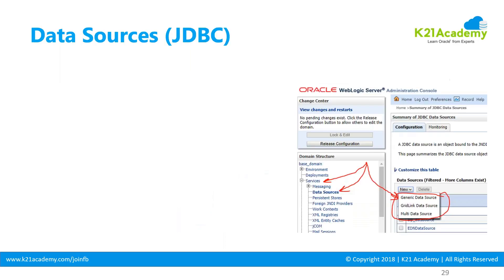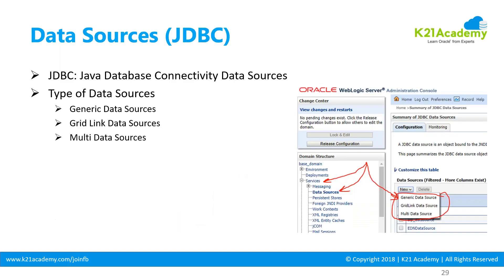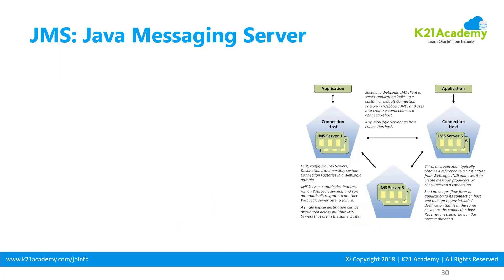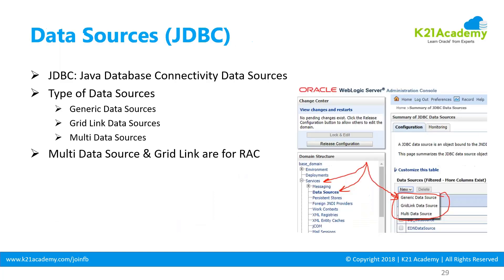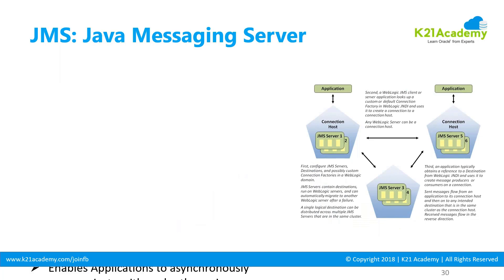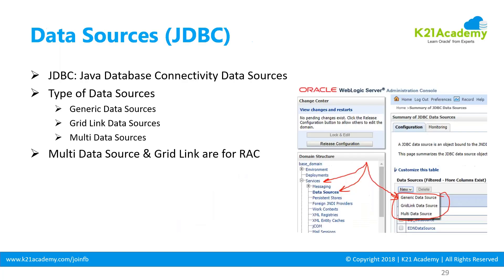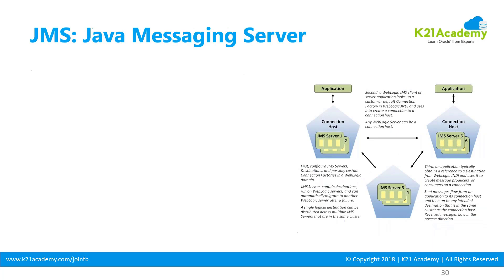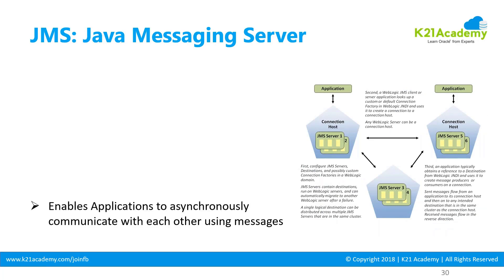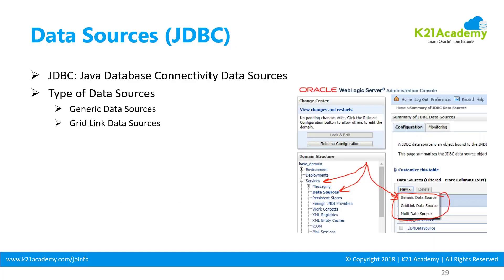Next, we'll look at other topics like JDBC and JMS. JDBC stands for Java Database Connectivity. If an application needs to talk to a database, it will use JDBC. There are three different types of JDBC data sources: generic, GridLink, and multi-data source. We'll cover those and JMS in the next lesson.